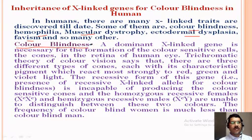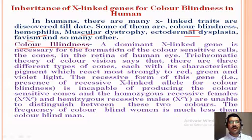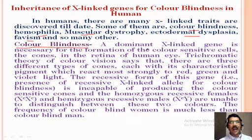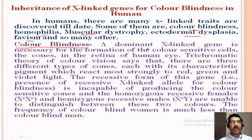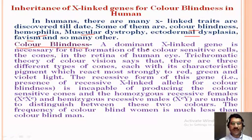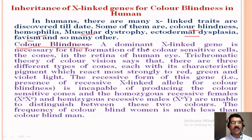First, we should know what color blindness is. Color blindness is a trait or disease found in humans in which a person cannot distinguish between red and green color. When a person is color blind, if we show them red they will say it is green, and when shown green they will say it is red.